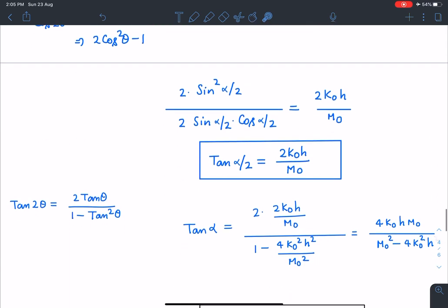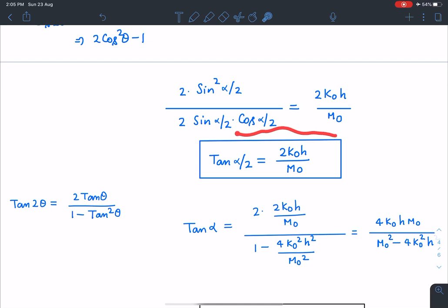If we further solve it, we get this tan alpha by 2 as 2k0 h by m0. So it's a very clean answer here. Alpha is known to me.